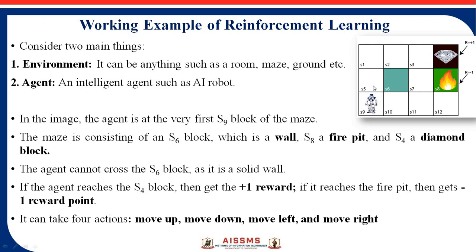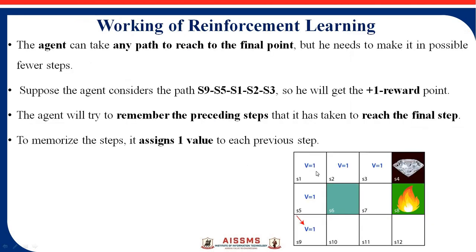For each and every step, the agent takes a decision — whether the diamond is here, a wall is there, or a fire pit is there. The agent takes a decision at each phase: at S9 move up to S5, move up to S1, then move left to S2, move right to S2, move right to S3. In this way, the particular action sequence is taken. This is the concept of reinforcement learning.